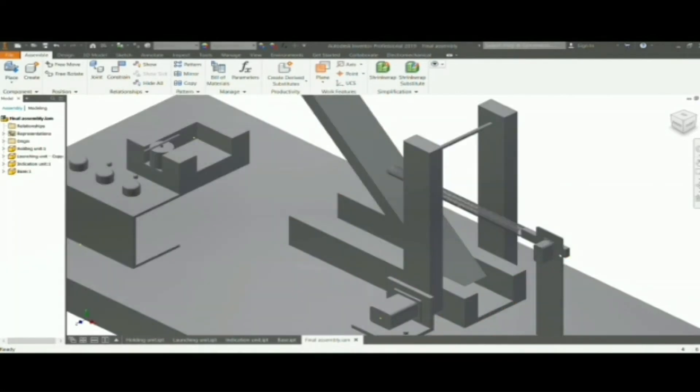Now the launching unit. Launching unit consists of servo 3 which helps in stretching of spring that is connected to the launching pad.